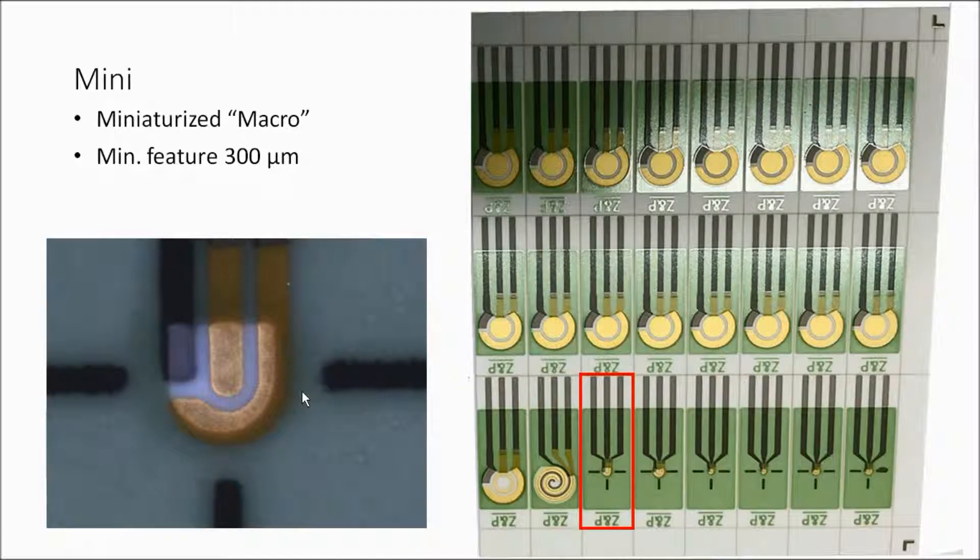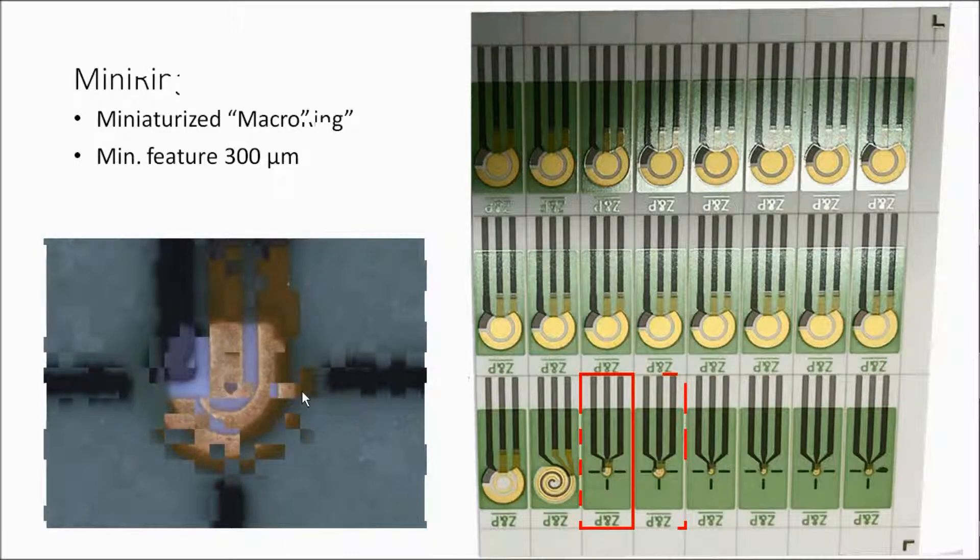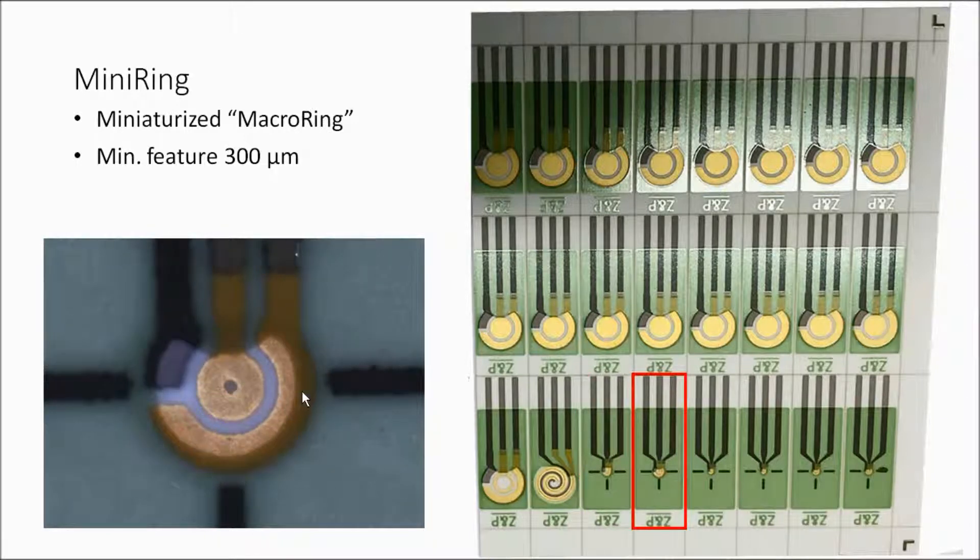Then we have mini electrodes here - the feature sizes are in the 300 micron region. We have some macro ring electrodes here, again with minimum feature size about 300 microns.